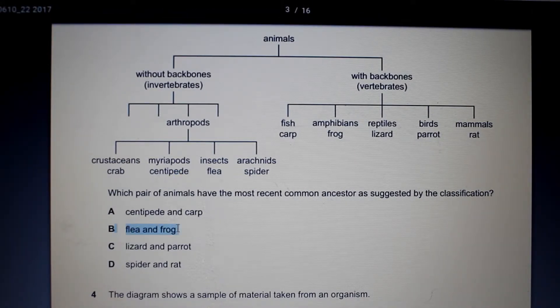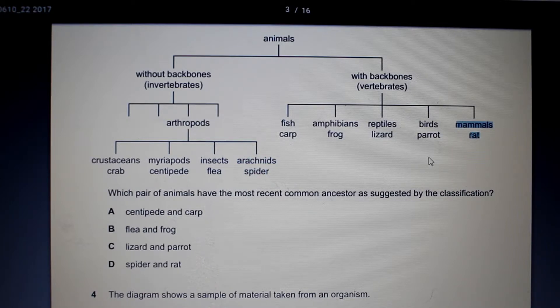Then we've got a flea and a frog. So here we've got flea under insect and here we've got frog in amphibians. Then we've got lizard and parrot. The lizard is under reptiles there and then we've got parrot which is under birds. They're quite closely related because they're in the same classification class if you will. And they've got a very common ancestor because according to this they're very closely related. Lastly we've got the spider and the rat. And they once again are quite distant relatives to each other. Thus I would say the animals which have the most recent common ancestor as suggested by this classification would be the lizard and a parrot.